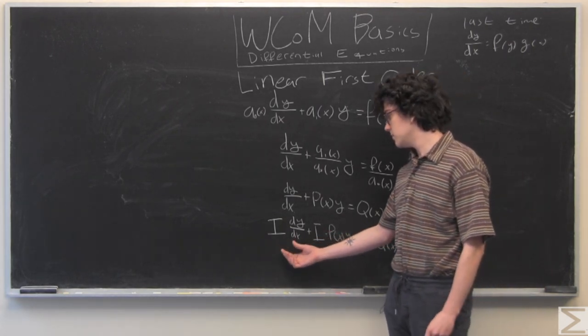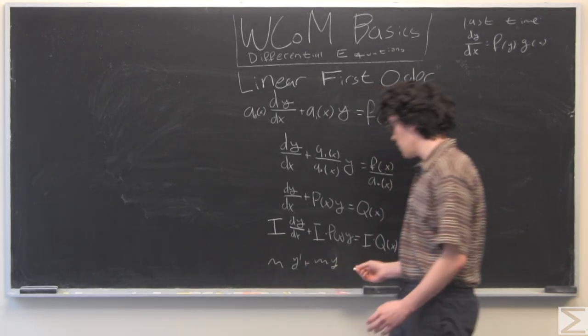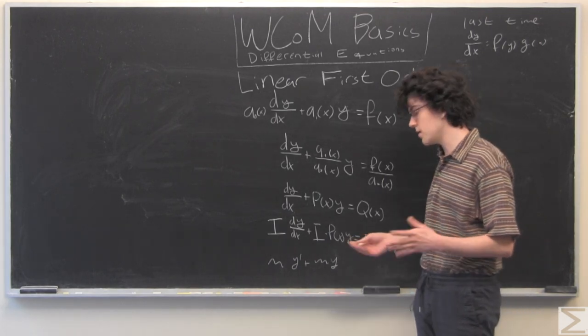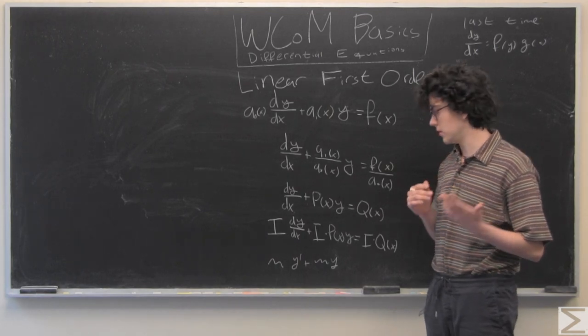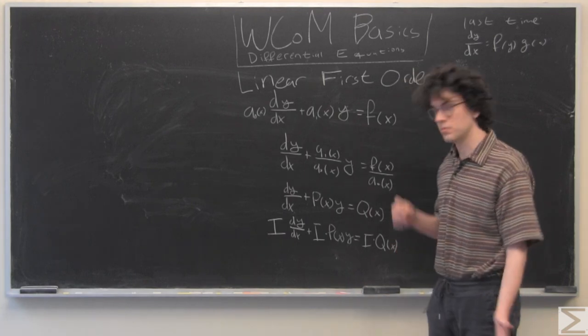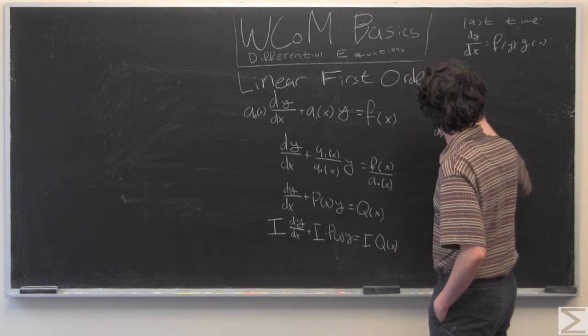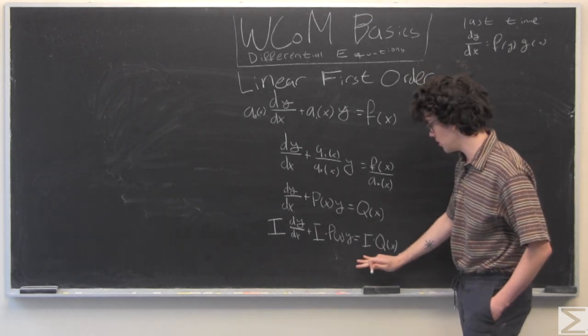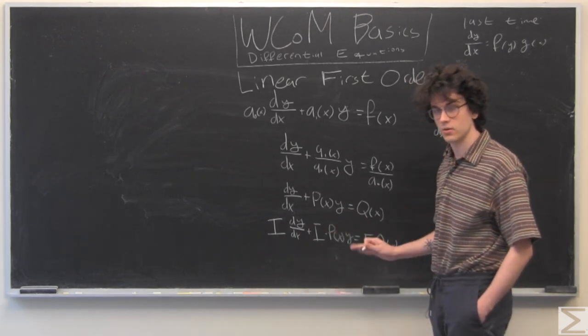And immediately, when we see something like something plus y prime plus something plus y times y, we're going to think we're doing some kind of product rule. So let's move in that direction. For now, I'm just going to ignore this right-hand side and work on the left-hand side, but we'll get back to the whole equation.